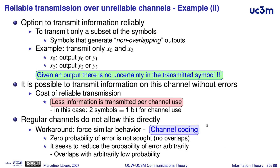But in general, regular channels do not allow to do this directly. In that case, it is necessary to do something to force a similar situation. This is channel coding. We will look for situations with arbitrarily low probability of error, where we will have overlapping with arbitrarily low probability.